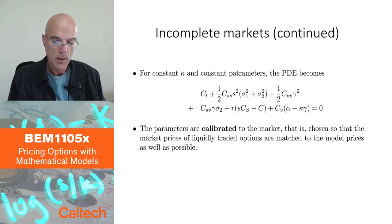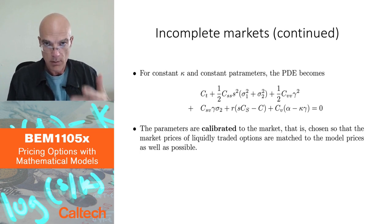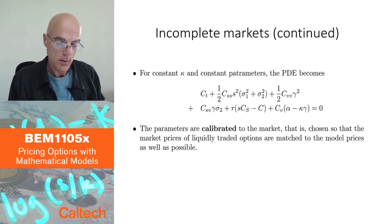If you introduce additional randomness, you may need additional terms in your partial differential equation. But if you have constant, so you assume typically that you have constant parameters and then you can write down your partial differential equation.